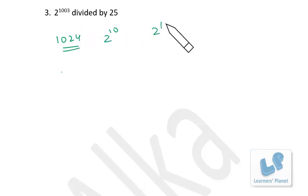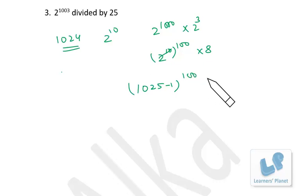What you can do is write 2 raised to 1003 as 2 raised to 1000 times 2 raised to 3. 2 raised to 1000 can be written as 2 raised to 10, raised to 100, times 8. Now 2 raised to 10 is 1024, so 1024 can be written as 1025 minus 1. The remainder will be minus 1 raised to 100 if I divide by 25.